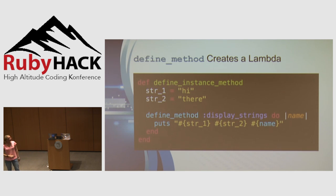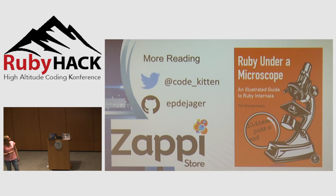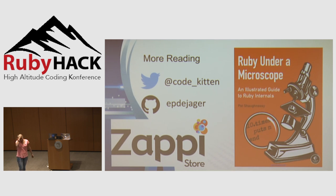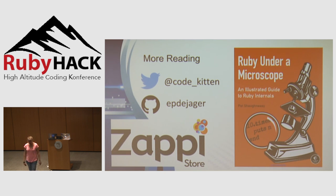That's all I've got to say today. Here are my details: I'm CodeKitten on Twitter, Epidio on GitHub. A lot of the more technical explanations came from a very awesome book called Ruby Under a Microscope. I work for a company called Zappi Store, which does pretty awesome market research software using Ruby and blocks extensively. Thanks very much.